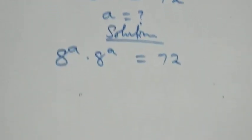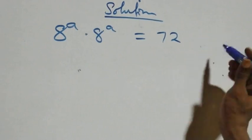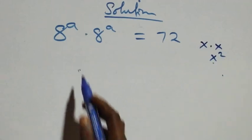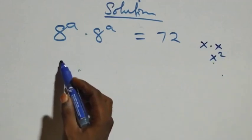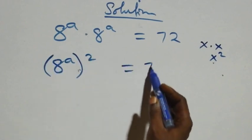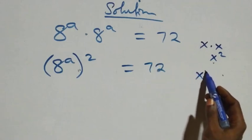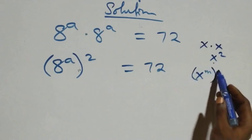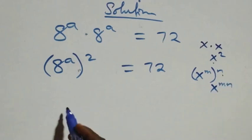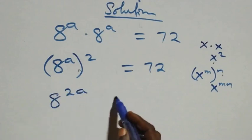This follows from x times x which we can write as x squared. Same thing here multiplying, so we can write it as 8 raised to power a, all squared, which equals 72. When we have x raised to power m raised to power n, we can write it as x raised to power mn. So this power multiplies and we can write it as 8 raised to power 2a equals 72.